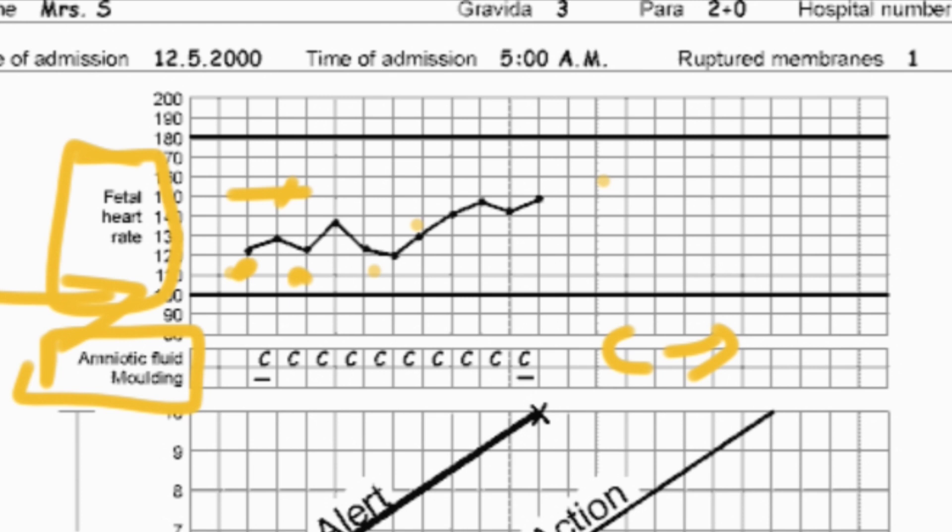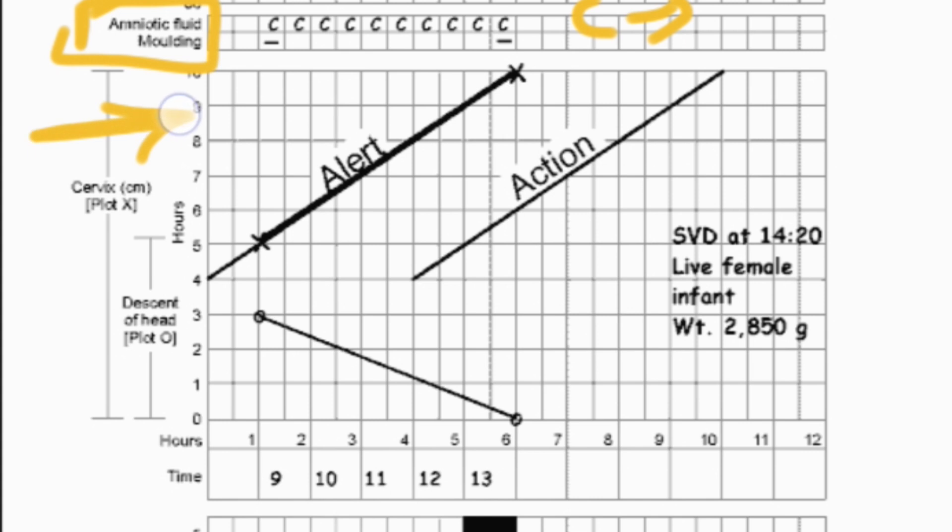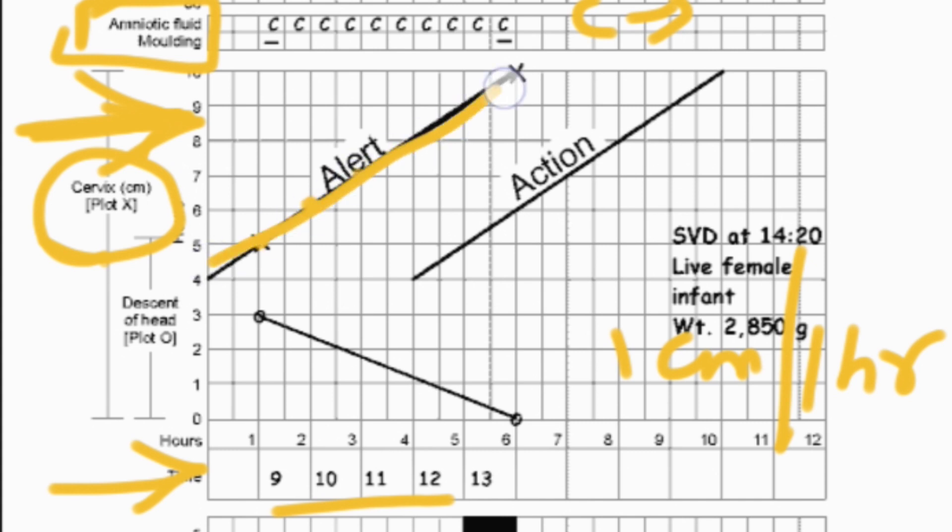The principle we saw regarding the partograph is here: the cervical opening should be 1 centimeter per hour. That is, for 1 hour it should open 1 centimeter. Here is an example: like 9 o'clock, 10 o'clock, 11 o'clock. We have the graph here. It was 5, and then after 1 hour it is 6, and then after 1 hour it is 7. So the graph goes this way. It is normal if it is opening 1 centimeter for 1 hour.